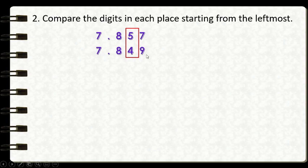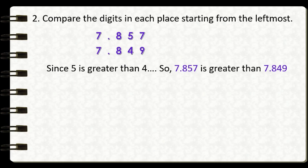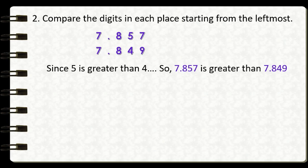We can see that the digits are different. We can say that 5 is greater than 4. So we will stop comparing here — we don't need to compare the remaining digits. Since 5 is greater than 4, it follows that 7 and 857 thousandths is greater than 7 and 849 thousandths. Now we can proceed to our last step.